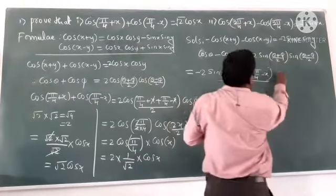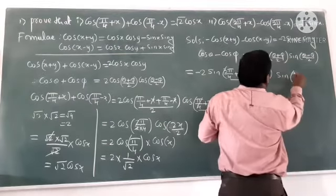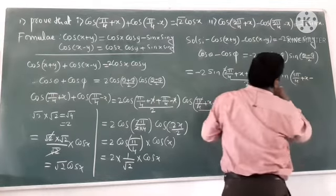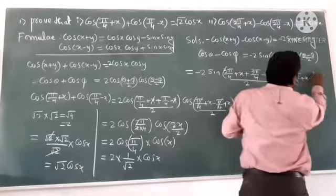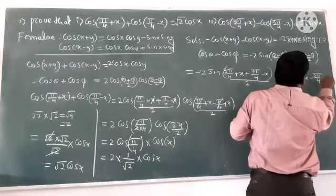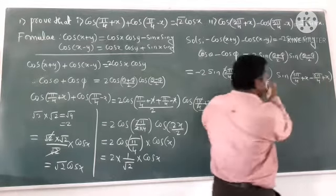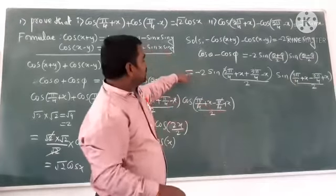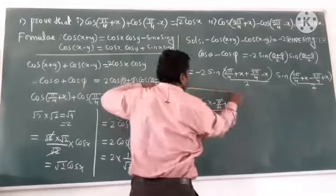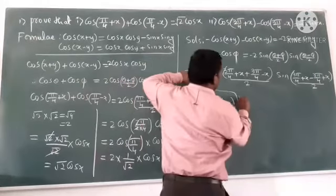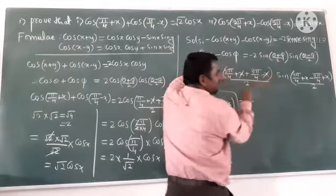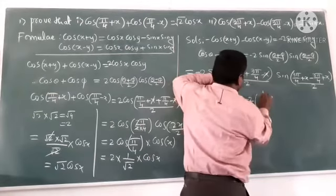So the value is equal to -2sin(3π/4 + x + 3π/4 - x) divided by 2. So 3π/4 + x - 3π/4 + x, minus minus plus, divided by 2. Right. So next what, minus 2, plus x minus x, so what is the remaining?